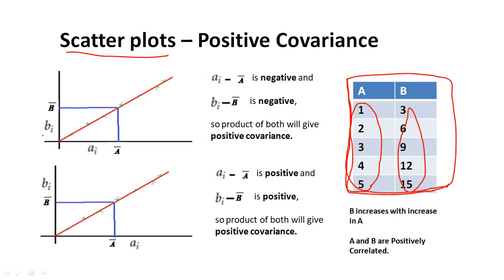Similarly, b_i is any random value in feature B such that b_i is less than b-bar. So a_i minus a-bar is negative, and b_i minus b-bar is also negative, so their product gives positive covariance. Similarly, if we take a_i and b_i such that both values are greater than their respective means, then a_i minus a-bar is positive and b_i minus b-bar is positive, so their product again gives positive covariance. We can see that the value of B increases with an increase in A.